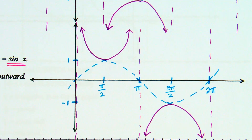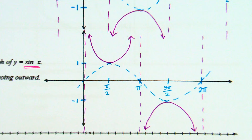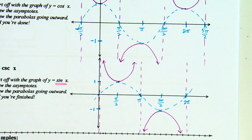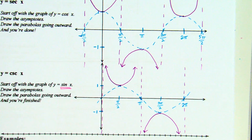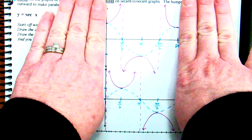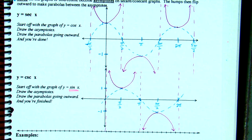How many parabolas do I end up with here? Two. With cosecant, which is based on sine, it's always a nice, even 2 parabolas. Your minimum requirement on secant is the equivalence of 2 — being 1 and 2 halves. If you turn it into 3, I totally get it. Probably easier to draw whole parabolas than half-parabolas, but your minimum requirement is 2 parabolas.